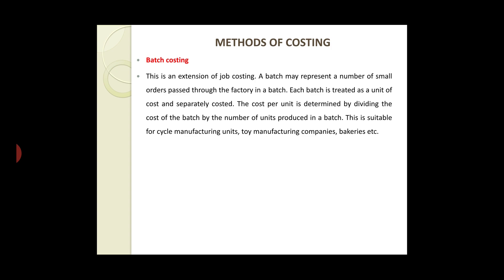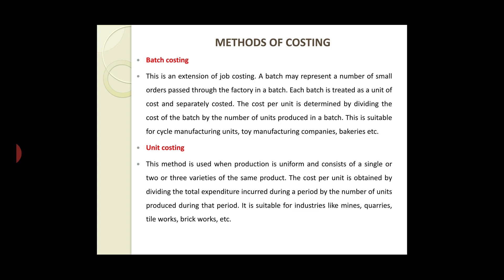Unit costing is used when production is uniform and consists of a single or two or three varieties of the same product. The cost per unit is obtained by dividing the total expenditure during the period by the number of units produced during that period. It is suitable for industries like mines, quarries, tile works, brick works, etc.